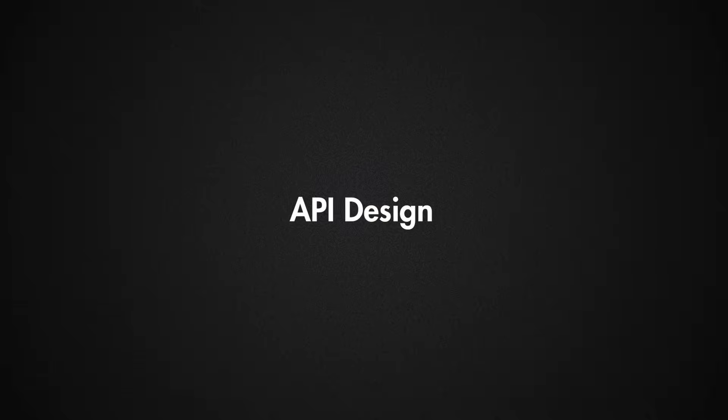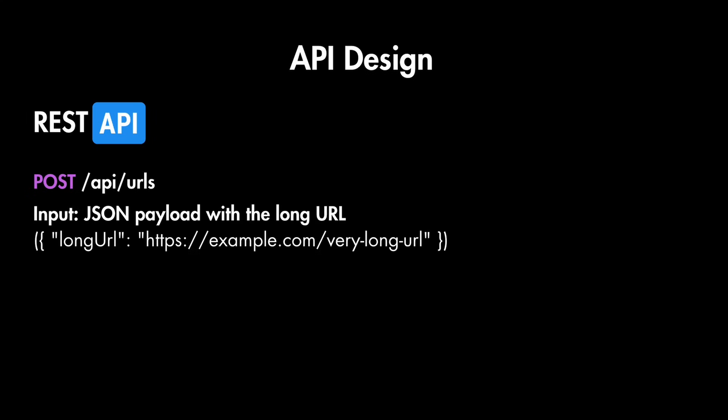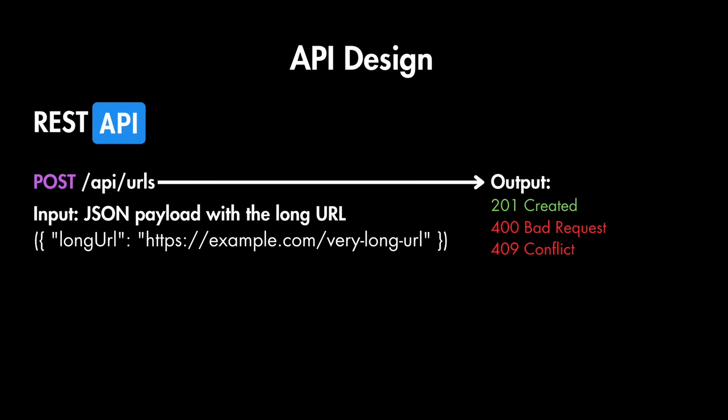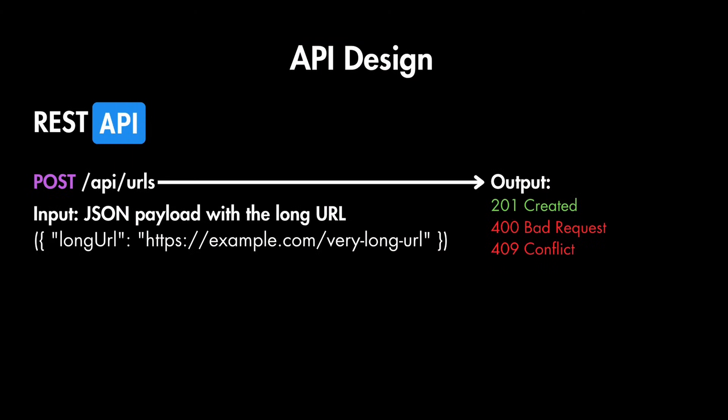Let's think about the API design of our single web server. We'll go with a simple REST API with two endpoints as stated in our functional requirements. The first is for creating a short URL: POST to /api/urls. The input is a JSON payload with the long URL. The output is a JSON response with a 201 status code and the newly created short URL in the body. If the request is invalid we return 400 bad request, meaning the input URL is malformed.